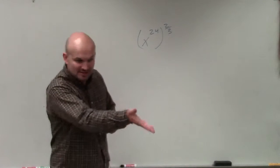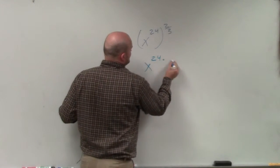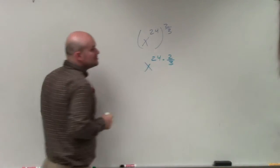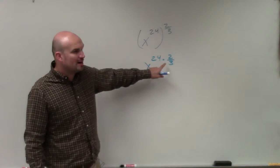So the rules of exponents that you can see in that first diagram, what that simply states is x to the 24th times 2 thirds. So whenever you have an exponent raised to a power, you just simply multiply your powers.